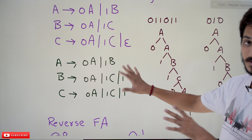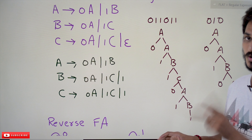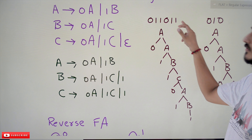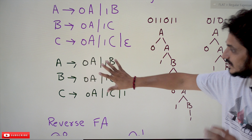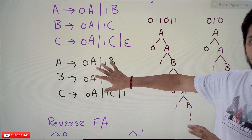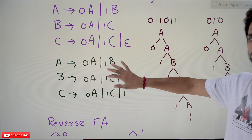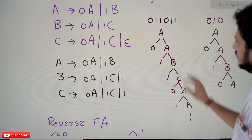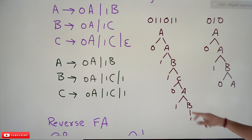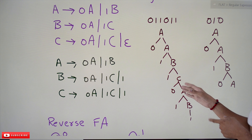This is our final right linear grammar. Let's check whether this grammar accepts strings ending with last two characters as one one. Take the string zero one one zero one one — yes, the last two characters are one one. Using these productions, if you can derive this string using any choice from the options, it is accepted.